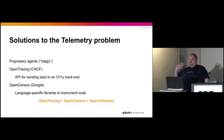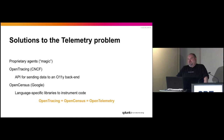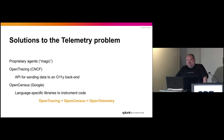Before OpenTelemetry, there were some other things. First were proprietary agents — vendors would say, install our agent one time and it's magic, it'll instrument everything. That's great until you decide to switch vendors or go beyond what they can handle. OpenTracing was a project from the Cloud Native Computing Foundation which created an API for sending data to an observability system — a standard way to get telemetry data into a system. But there wasn't a vendor-agnostic way to instrument your code, so Google came up with OpenCensus to do that. OpenTracing and OpenCensus do a lot of similar things, and CNCF and Google agreed, so now we have OpenTelemetry.